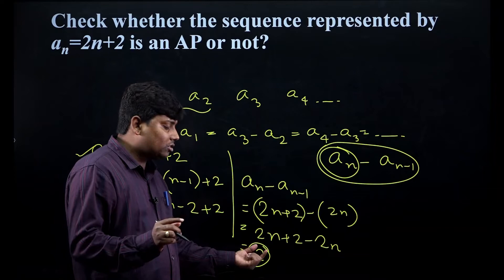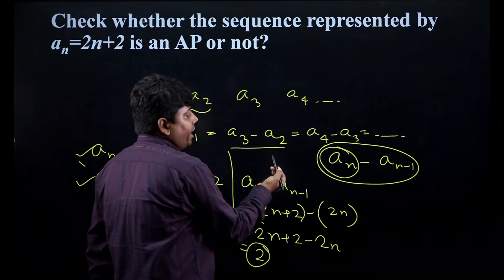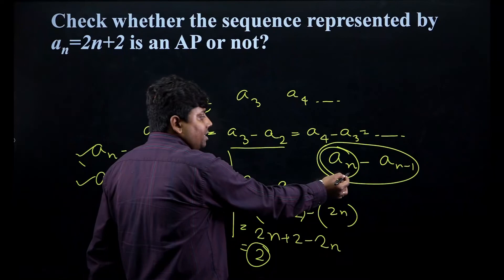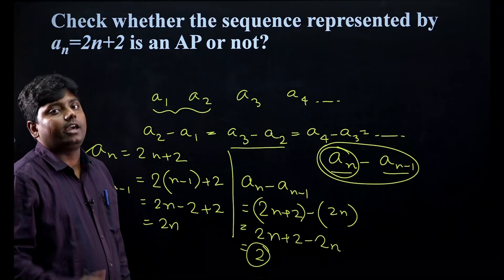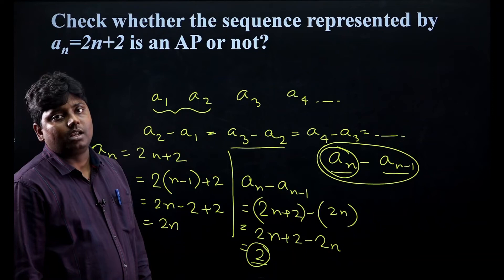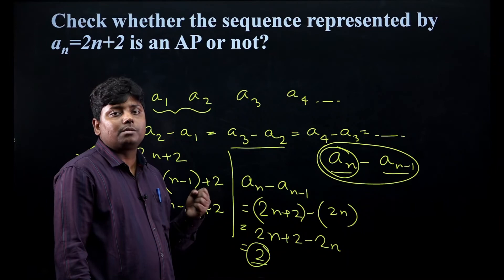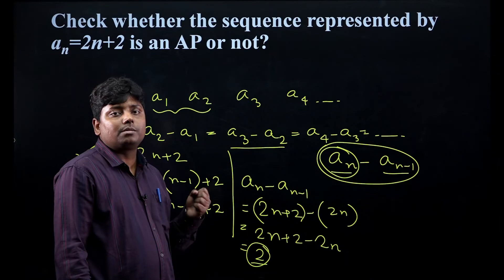It means the difference between two consecutive terms is constant — it is 2. We can conclude that the difference between a3 and a2, a4 and a3, and aₙ and aₙ₋₁ is all the same, which is 2. Because aₙ is a generalized term and aₙ₋₁ is the term just preceding it, and since the result is free from any variable — it is only a constant — the difference between consecutive elements is always constant. That's why we can say it is an AP. So it is proved that this is an AP.